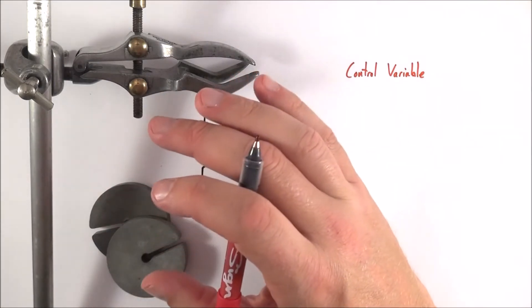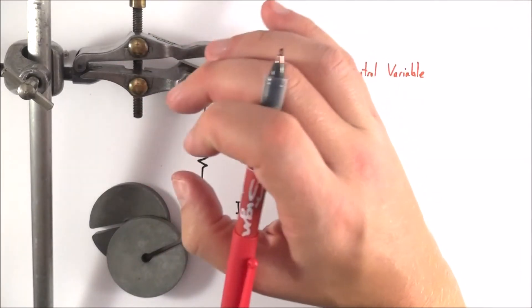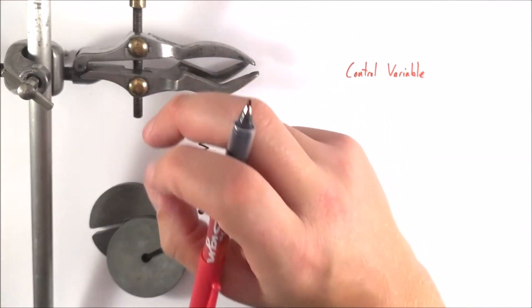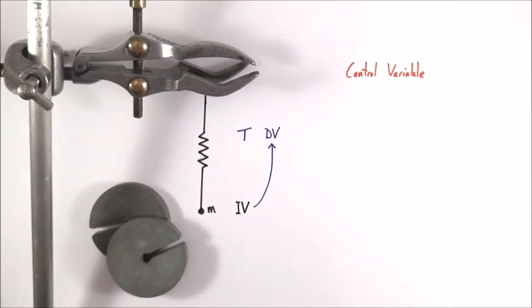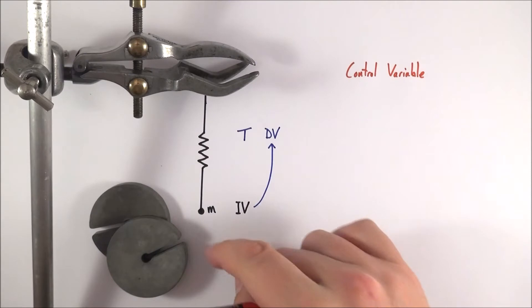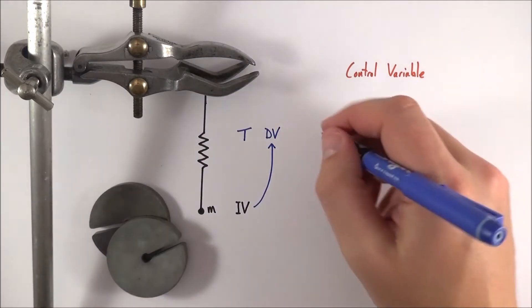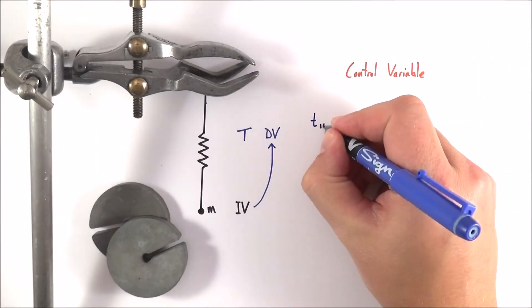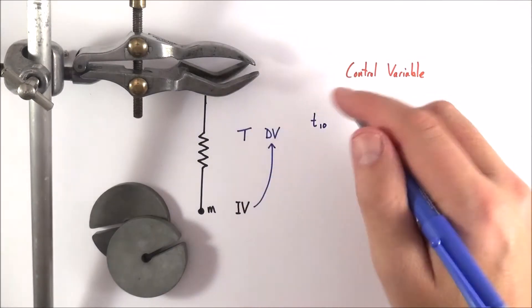And so in this example here, we're going to keep the same equipment but there's other things that we might consider controlling. Perhaps what we might think about is we time the same number of oscillations because you don't just time one oscillation, you're going to maybe look at the time for maybe 10 oscillations. But you wouldn't do it for 10 oscillations sometimes.